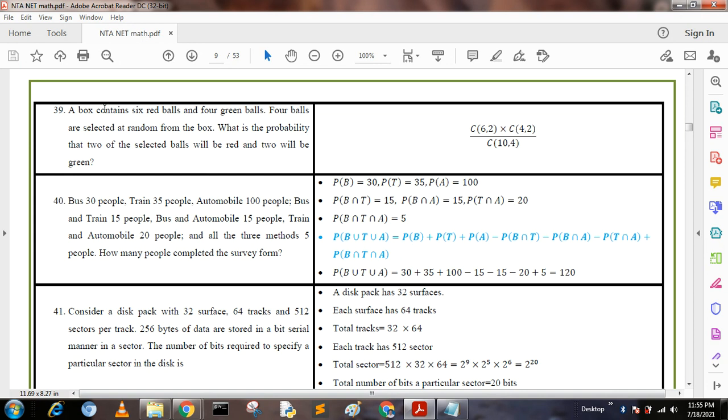Next question: A box contains six red balls and four green balls. Four balls are selected at random from the box. What is the probability that two of the selected balls will be red and two will be green? This question comes from probability. We write the formula: C(6,2) × C(4,2) / C(10,4). If we calculate this value we get the required answer.